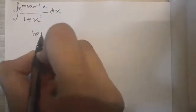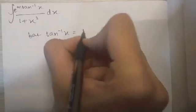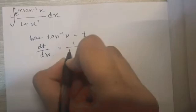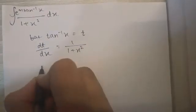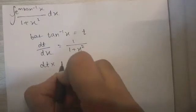So if I keep tan inverse x as t, then dt by dx would be 1 upon 1 plus x square. I could write dx as dt into 1 plus x square.